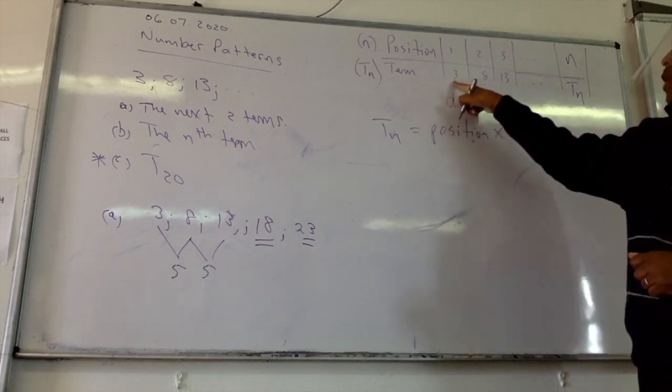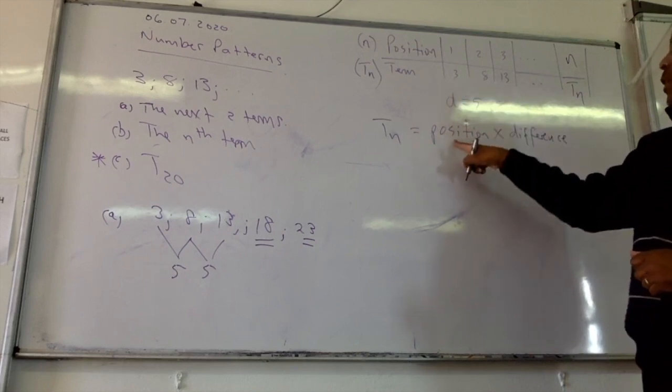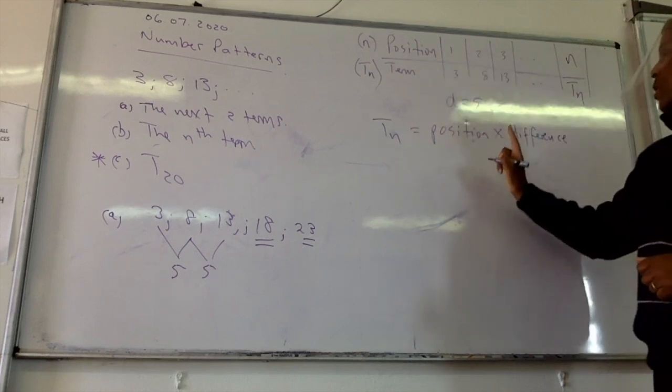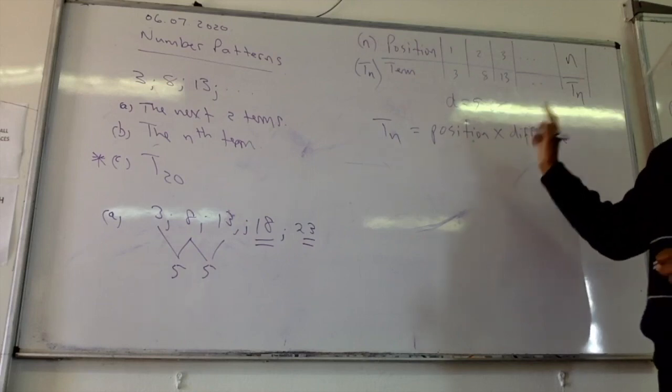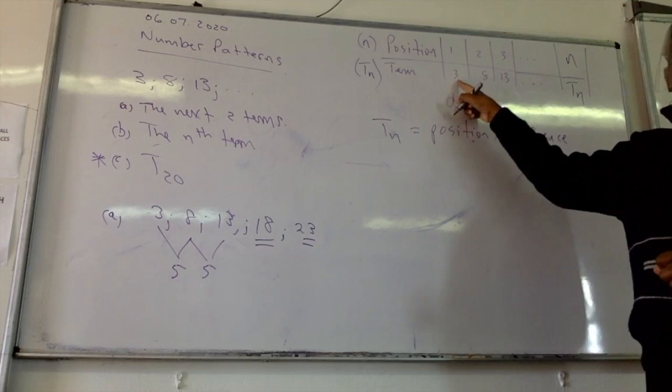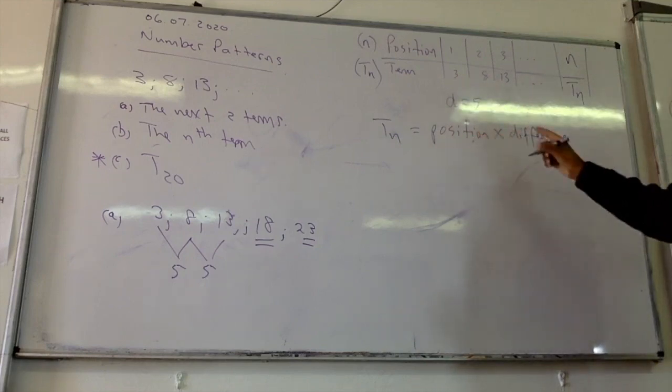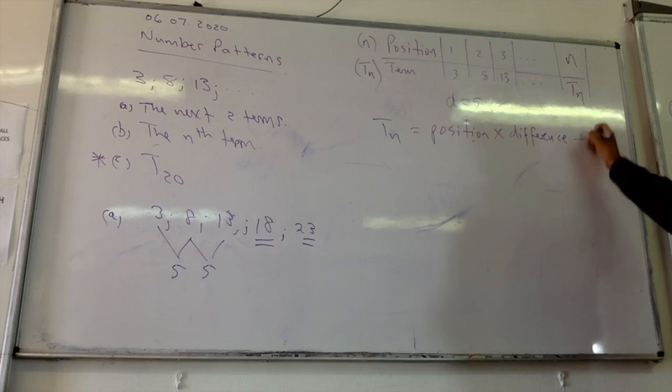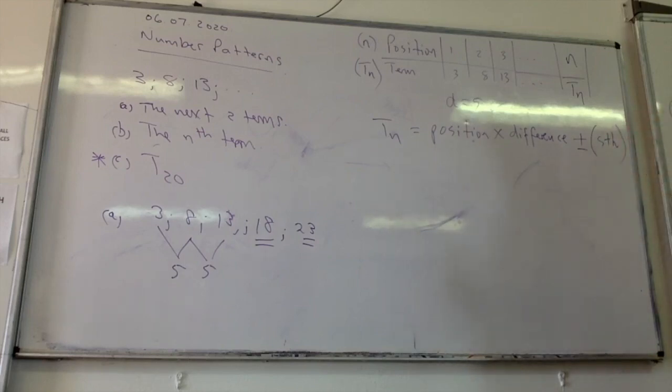Is one multiplied by five equal to three? No. So it's position multiplied by difference plus or minus something. You need to check, it's plus or minus something, right? Okay. So in this case, the position is one, d is five. One multiplied by five will give you five, and not three, so what do we do? Subtract two.